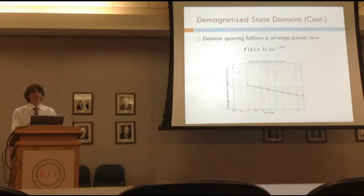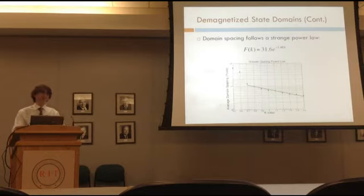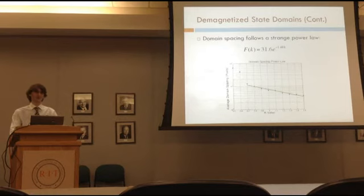We also looked at the radius of all the different K values. When we took the inverse of the radius, this gave us the domain spacing. It followed a power law. We're not quite sure why it follows that power law. We didn't get to investigate that this quarter, but it's something we're still very interested in looking into.